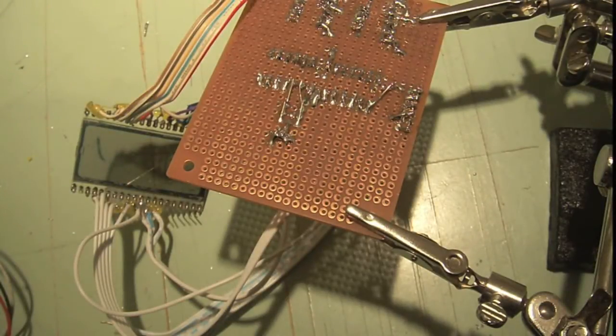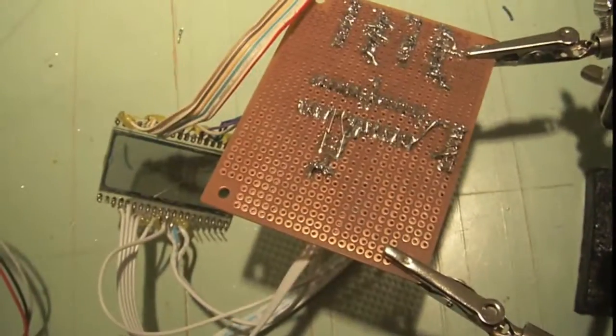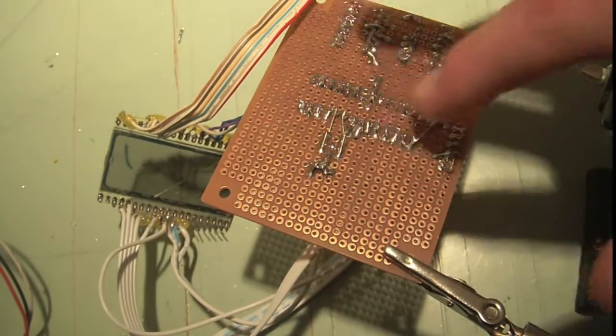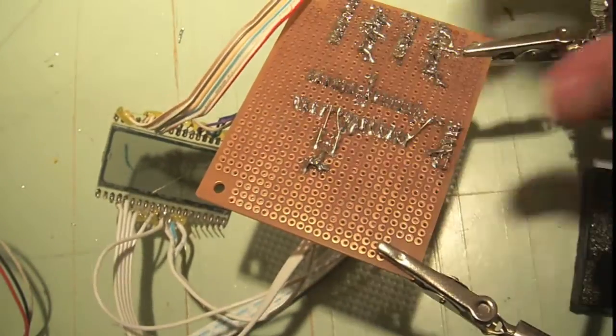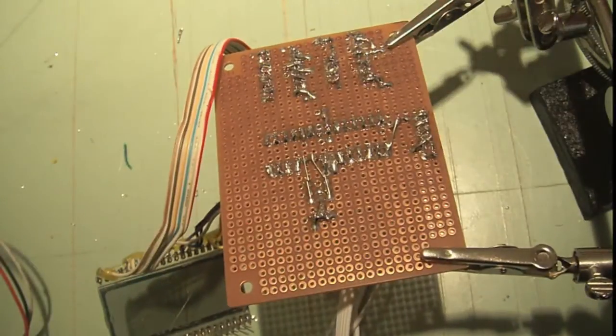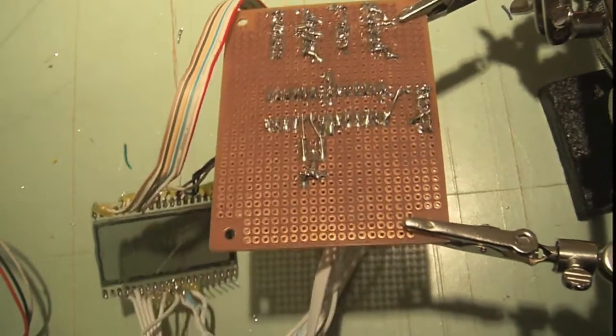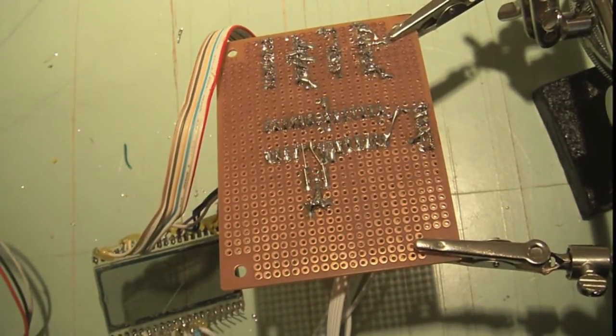Hey guys, I'm back. So today I'm going to be showing you some tips for proto-boarding with this sort of proto-board. It's the kind that doesn't have strips. Each hole just has a copper circle around it and there's no strips or any connections on the board. So I'm going to be giving you some tips for making this as neat as possible.